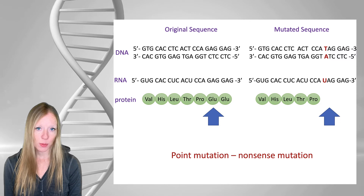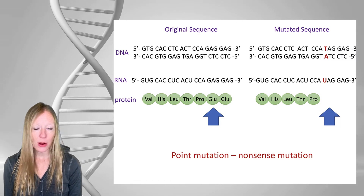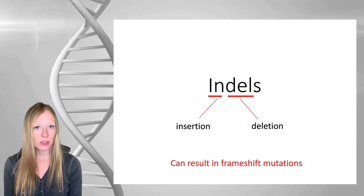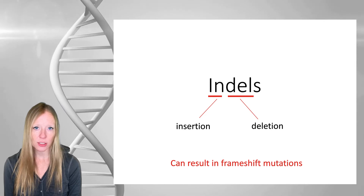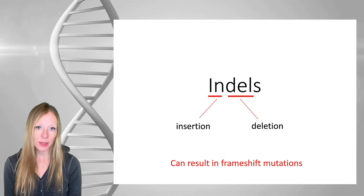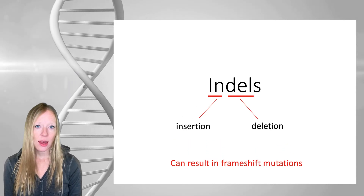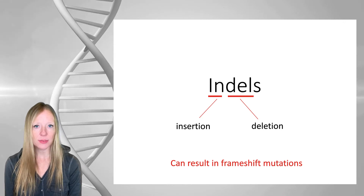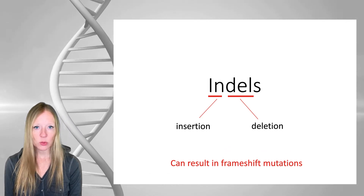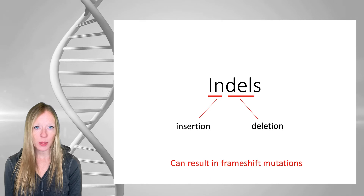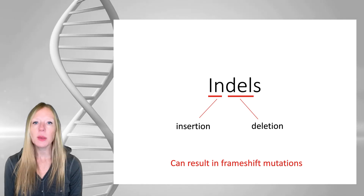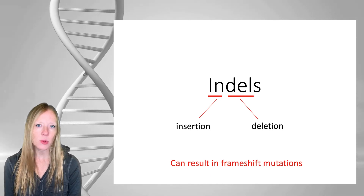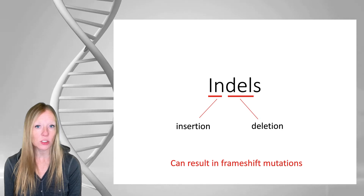This covers our three types of point mutations. We're now going to talk about indels. Indel is a contraction for insertion deletion. We've already talked about big insertions and deletions at the chromosome level, but we can also have very small indels of just one or a few base pairs, and this can really be a problem because if we insert a single base, we can get what's called a frameshift mutation.